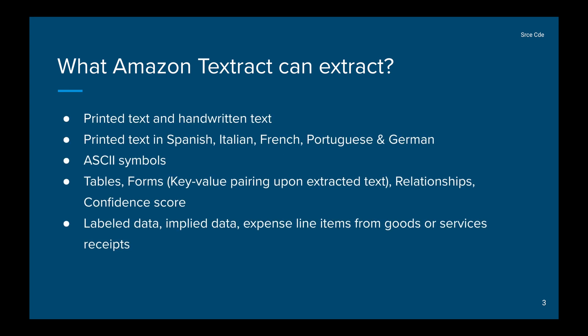Amazon Textract can detect and extract printed and handwritten text from documents. Apart from English, it supports detection and extraction of printed text in Spanish, Italian, French, Portuguese, and German. It is also able to extract symbols, structured data like tables and key-value pairs, and the relationships between them. It also provides a confidence score which helps in decision-making for the detected text. Additionally, it can explicitly extract label data, implied data, and expense-related line items from invoices and receipts.